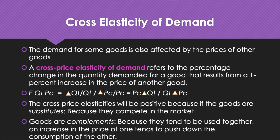For substitute goods like tea and coffee, the cross-price elasticity is positive. A rise in the price of coffee makes tea relatively cheaper, leading to an increase in quantity demanded of tea — the demand curve for tea shifts to the right, and the elasticity is positive. For complement goods, which tend to be used together, an increase in the price of one pushes down consumption of the other. For example, if the price of gasoline goes up, the quantity of gasoline demanded falls and people drive less, so the demand for cars also falls — the demand curve for cars shifts to the left, making the cross-price elasticity of cars with respect to gasoline negative.